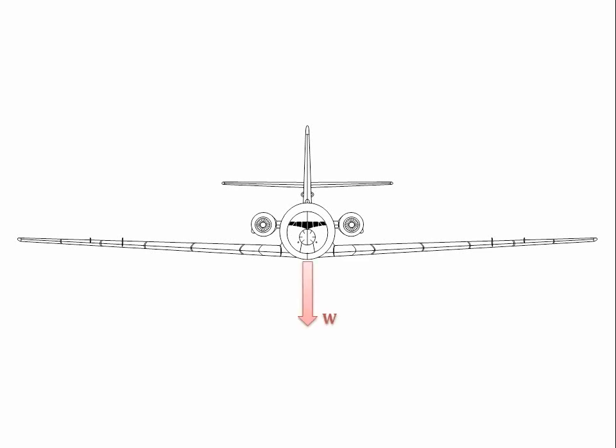We'll start by creating a simple free body diagram. First we have the weight of the aircraft. Now it's clear in this configuration the plane isn't flying very well, so we'll add some lift in order to balance out the weight.